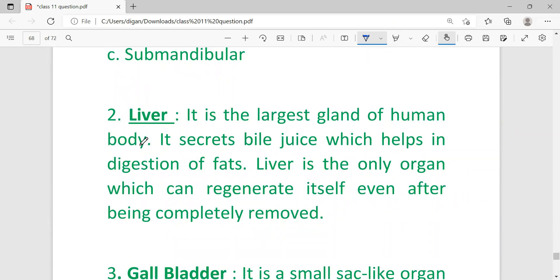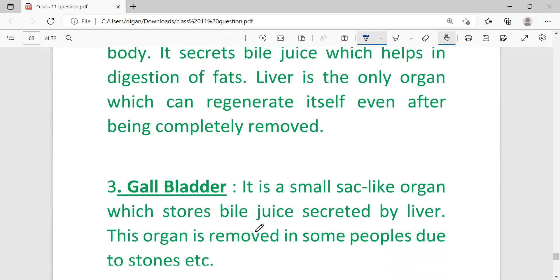Liver: It is the largest gland of the human body - that's also one important point; one mark can come asking what is the largest gland of human body, then you write liver. It secretes bile juice which helps in digestion of fats. Liver is the only organ which can regenerate itself even after being completely removed.